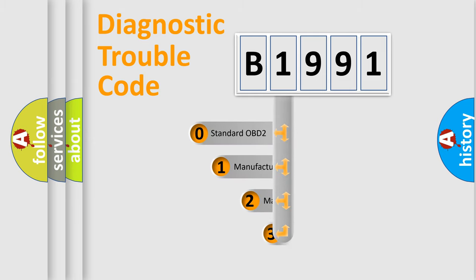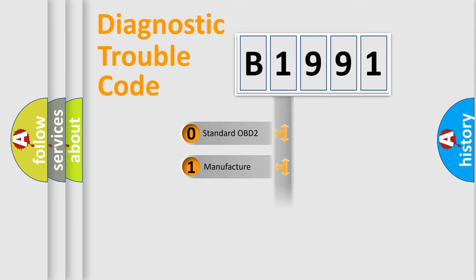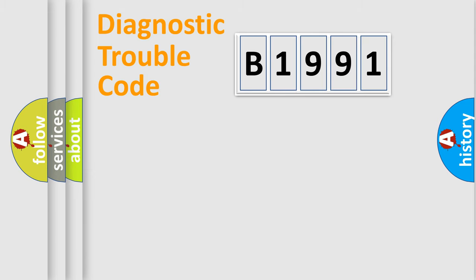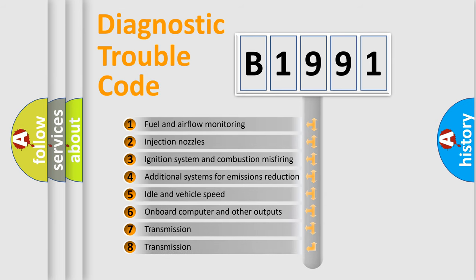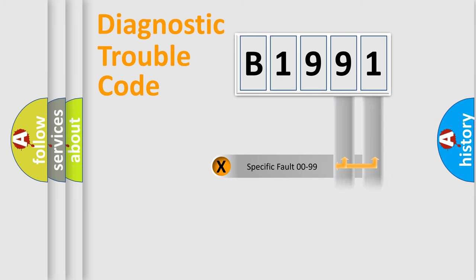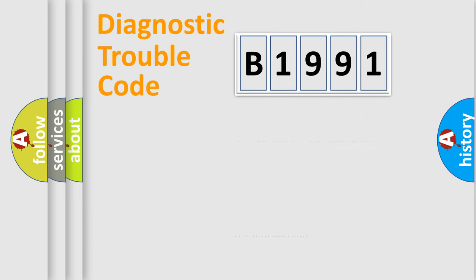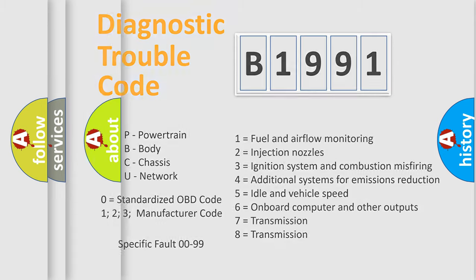This distribution is defined in the first character of the code. If the second character is expressed as zero, it is a standardized error. In the case of numbers 1, 2, or 3, it is a more manufacturer-specific expression of a car-specific error. The third character specifies a subset of errors. The distribution shown is valid only for the standardized DTC code. Only the last two characters define the specific fault of the group. This division is valid only if the second character code is expressed by the number zero.